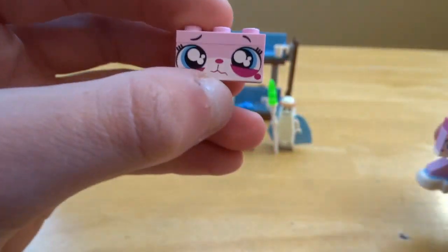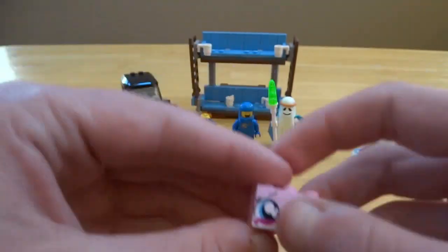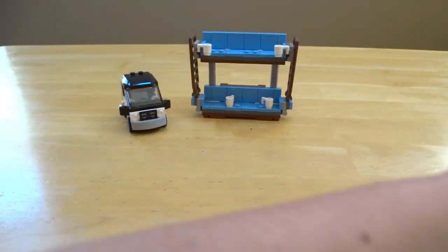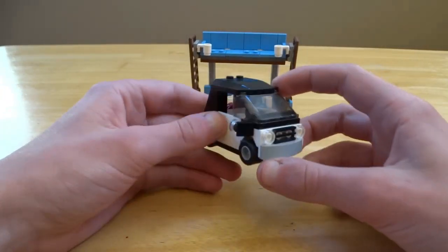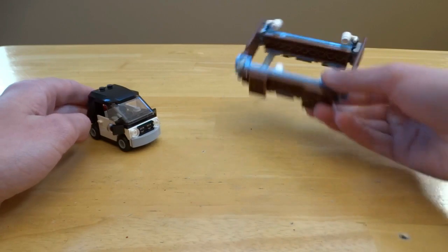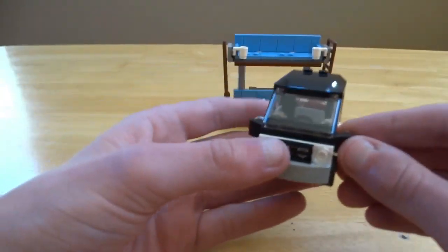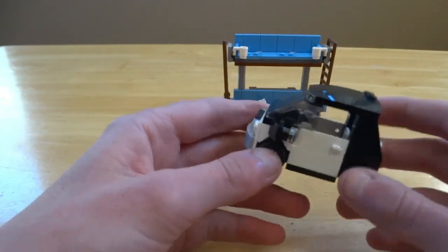Now for the actual set itself, you get a smaller build and then obviously the double-decker couch. For the smaller build, it is Emmet's car that you see at the beginning of the movie.